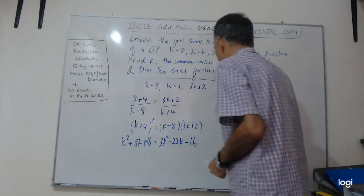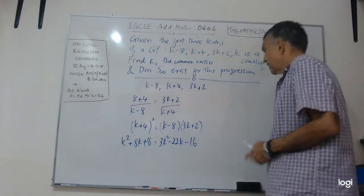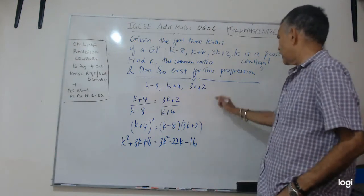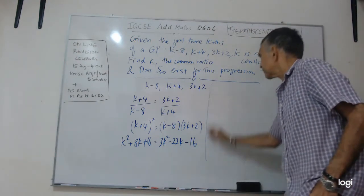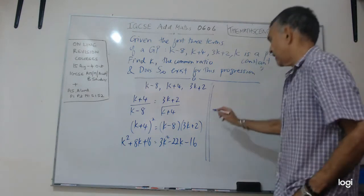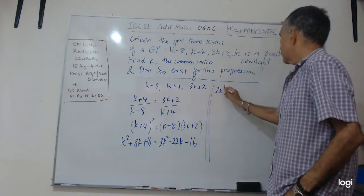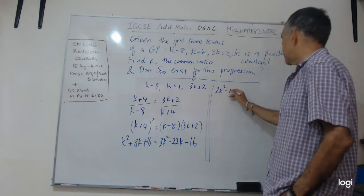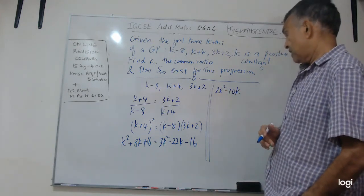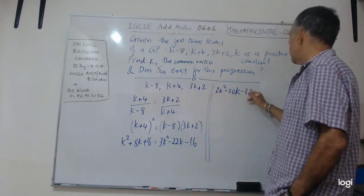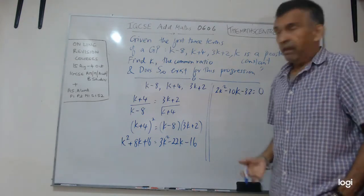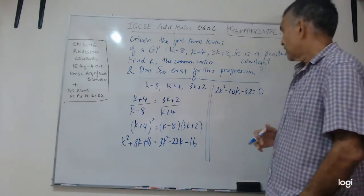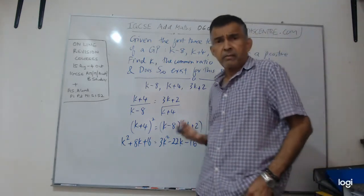Let me check my work. K squared, I have 8K and 16. 3K squared minus 24 and plus 2 minus 22 and I have minus 16. Looks pretty good. Work confidently. Let me write here. Let's clean up the algebra. I have 3K squared, bring it all to this side.